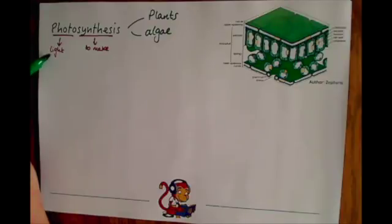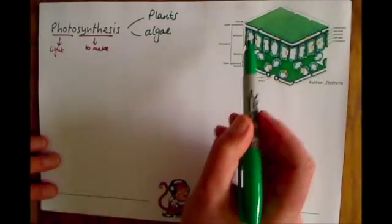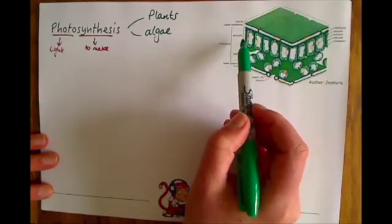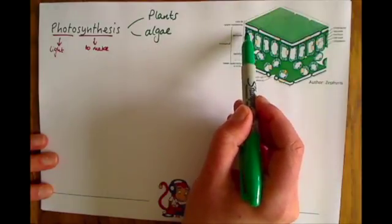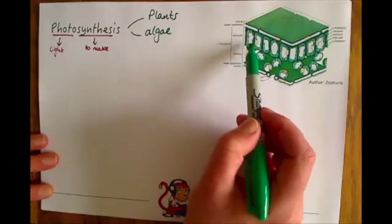That's important for what photosynthesis actually is, because it's a process that needs light and uses light to make glucose, which is a sugar. It occurs in something called chloroplasts, which are small organelles inside a cell.